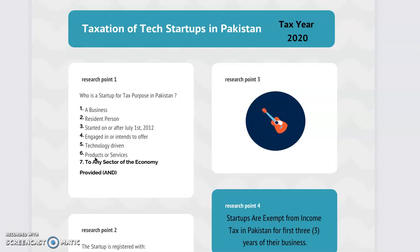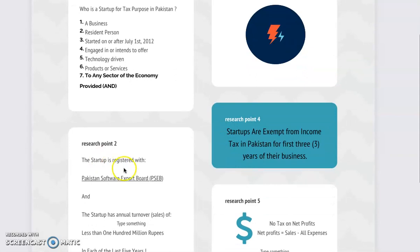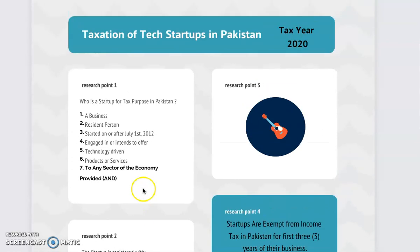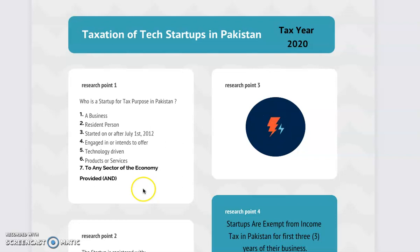To summarize: tech startups in Pakistan have income tax exemption for the first 3 years, starting from the year you register with the Pakistan Software Export Board, and that year should be the year you start issuing invoices to your customers. I am your host Tony Williams, you are watching Tax Dosti reporting videos — subscribe to our channel for more videos on tech and tax. Thanks.